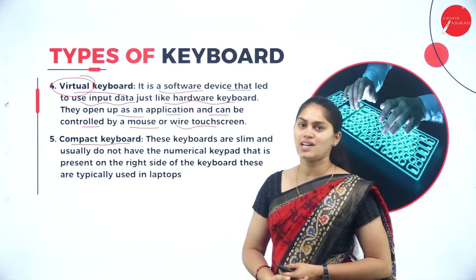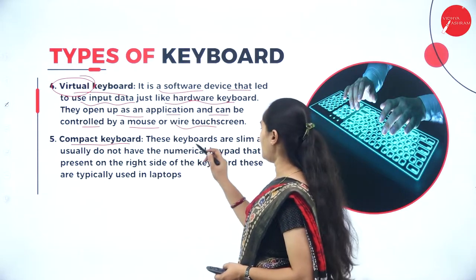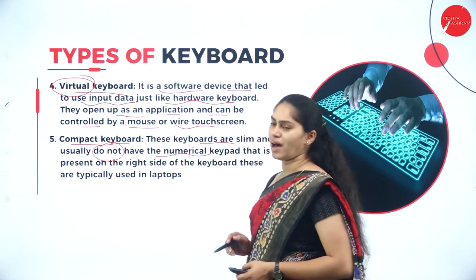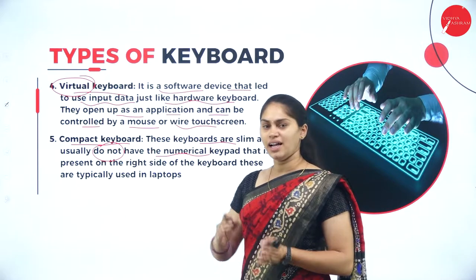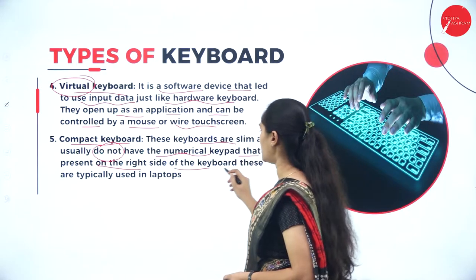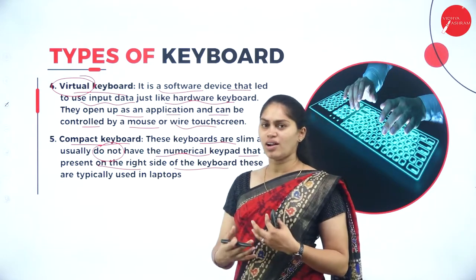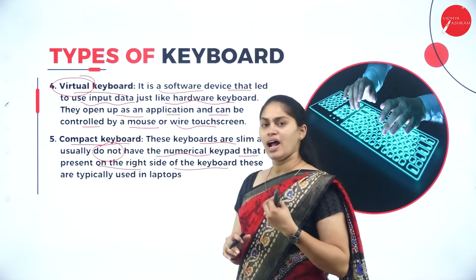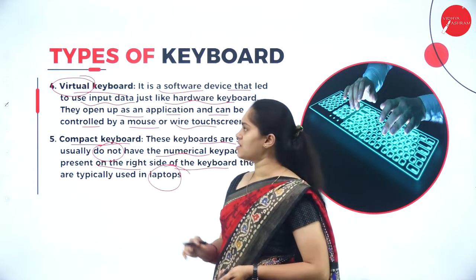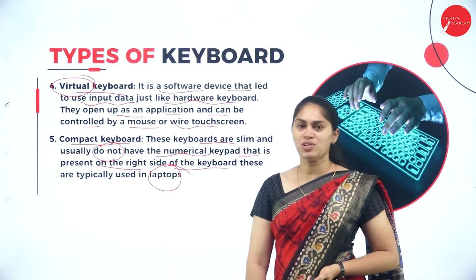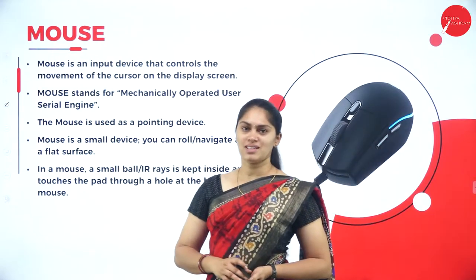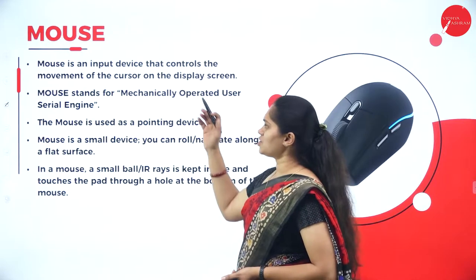The fifth type is the compact keyboard, which is found in laptops. These are slim and usually do not have a numeric keypad — the separate numeric keypad normally found on the right side of a standard keyboard is absent in compact keyboards. These are the five different types of keyboards.